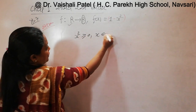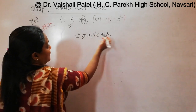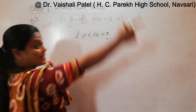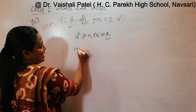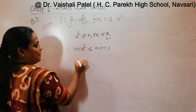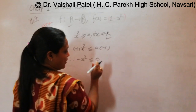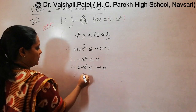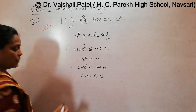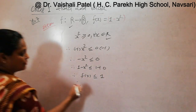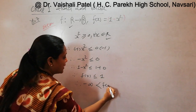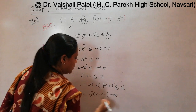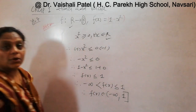Since x squared is greater than or equal to 0 for all x belonging to capital R, we have 1 minus x squared is less than or equal to 1. Therefore, minus infinity is less than f of x, which is less than or equal to 1. Therefore, f of x belongs to the open-closed interval (-infinity, 1].